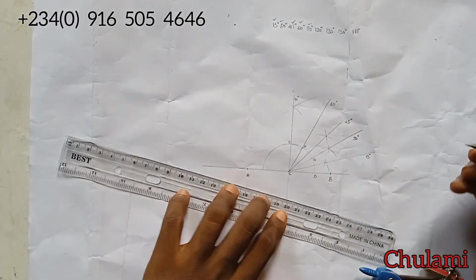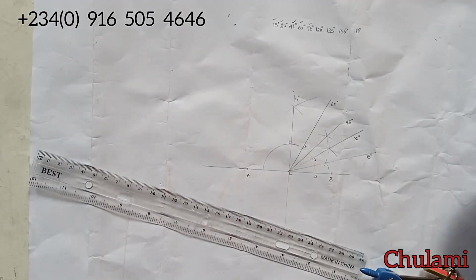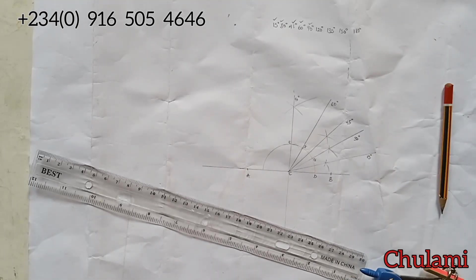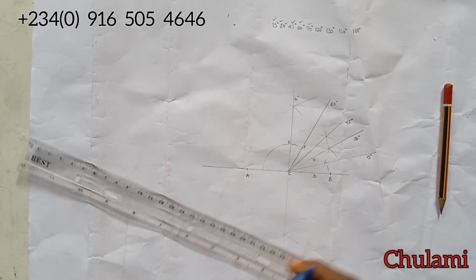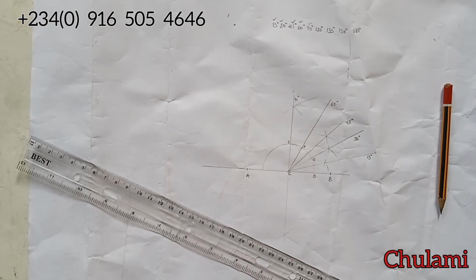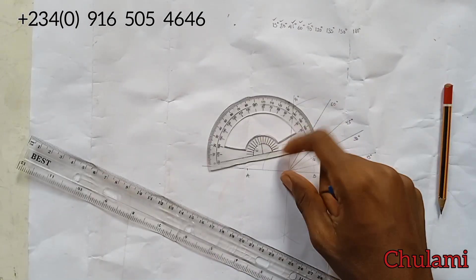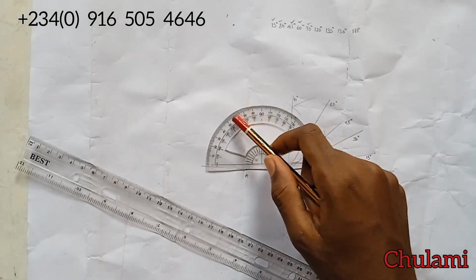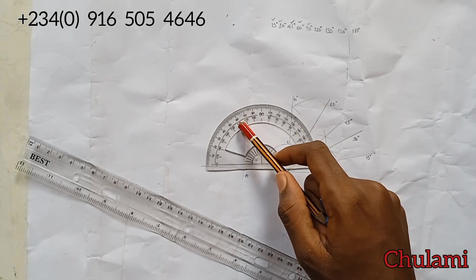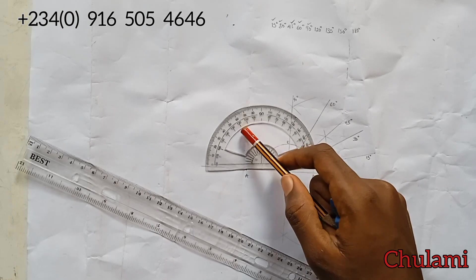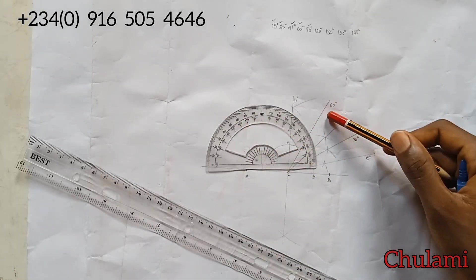All right, so we have done 15, 30, 45, 60, and 90. Let's do that for 120, 135, 150, and 180. Now for 120, it is the same way of constructing 60, because if you look at your protractor, you can see that wherever you have 60 you have 120.